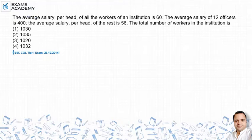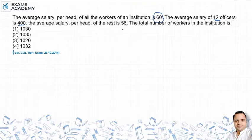The average salary per head of all the workers is 60. The average salary of 12 officers is 400. The average salary per head of the rest is 56.